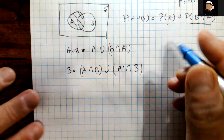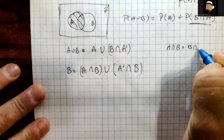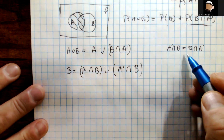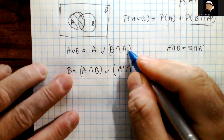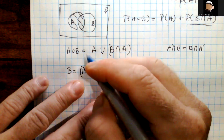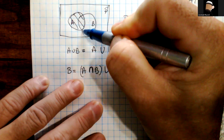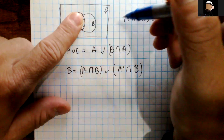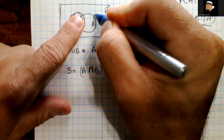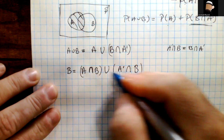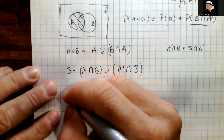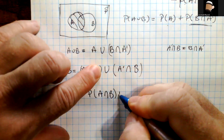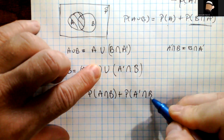To reiterate: A ∩ B is the overlap area, and to get all of B we also include everything outside A that's in B — the intersection of A-complement with B. So B equals (A ∩ B) union (A-complement ∩ B), and these two parts are disjoint.